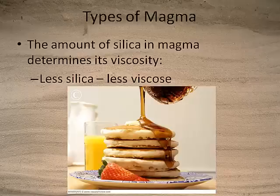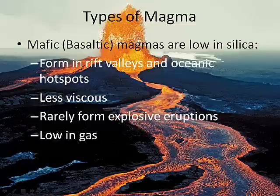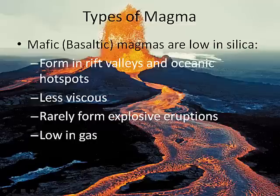What type of igneous rock is low in silica and high in iron? That's right — mafic rocks. So mafic magma is less viscous and more runny than felsic magma. Mafic or basaltic magmas are low in silica, and we find them in rift valleys and where hot spots in the mantle affect oceanic plates.